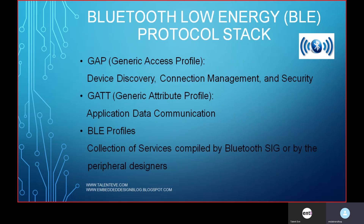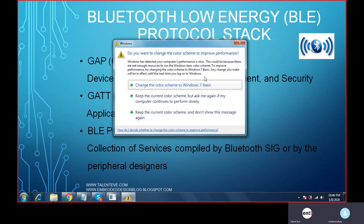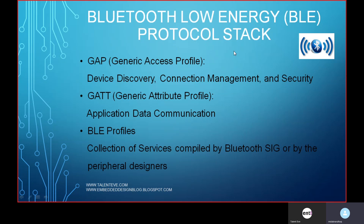GAP stands for Generic Access Profile. It is used for device discovery, connection management, and security. GATT stands for Generic Attribute Profile. Once the device is discovered and connected using GAP, GATT comes into picture and deals with the communication between the devices. The third term is Profiles — a collection of services. The Bluetooth SIG has defined many profiles so that developers can use them directly to build their applications.